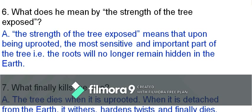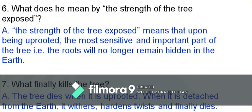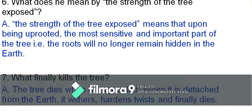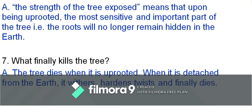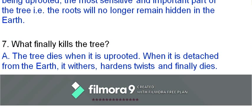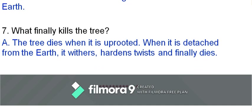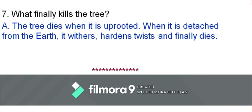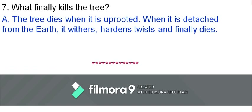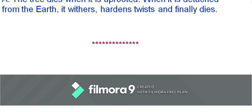Question: What is the meaning of 'anchoring earth' and 'earth cave'? Answer: 'Anchoring earth' means the earth supports the tree firmly; 'earth cave' refers to the pit where the roots bind the tree to the earth. Question: What does 'the strength of the tree exposed' mean? Answer: Being uprooted, the most sensitive part — the roots — are no longer hidden. Question: What finally kills the tree? Answer: The tree dies when uprooted, detached from the earth; it withers, hardens, twists, and finally dies.